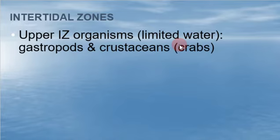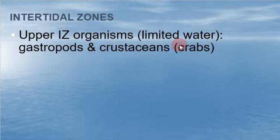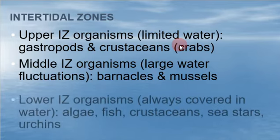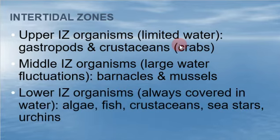So the intertidal zone — the IZ. Upper intertidal zone organisms, which have limited water, include gastropods, which are snails, and crustaceans, which are crabs. On high tide they have water; at low tide they don't. Middle intertidal zone organisms would include barnacles and mussels — ones that need water more frequently, but can hold water in them to survive at low tide. The lower intertidal zone organisms, which are always in water, would be algae, fish, crustaceans, sea stars, urchins, et cetera.